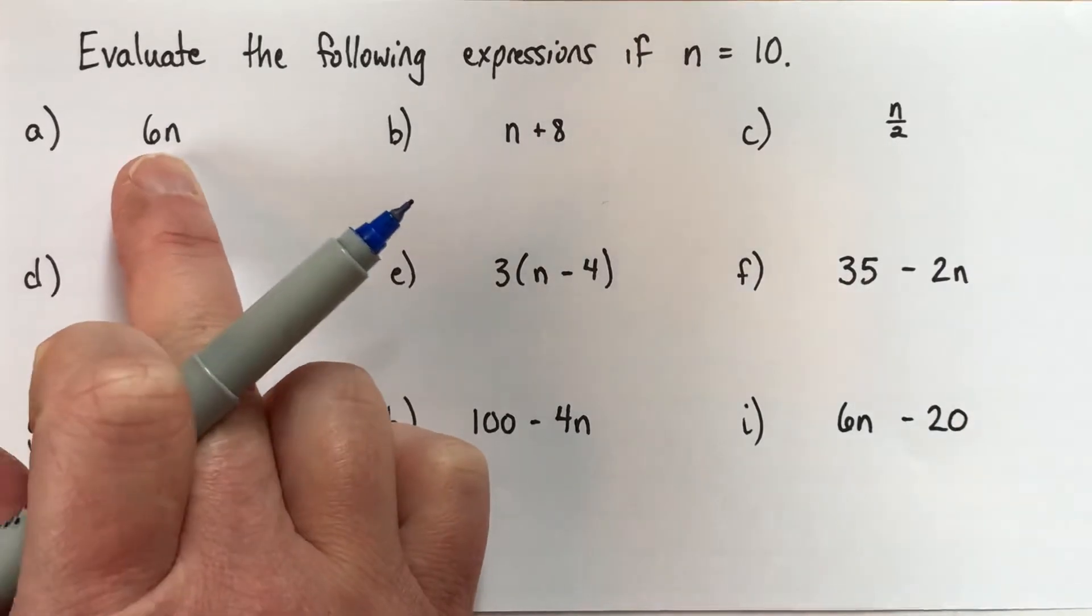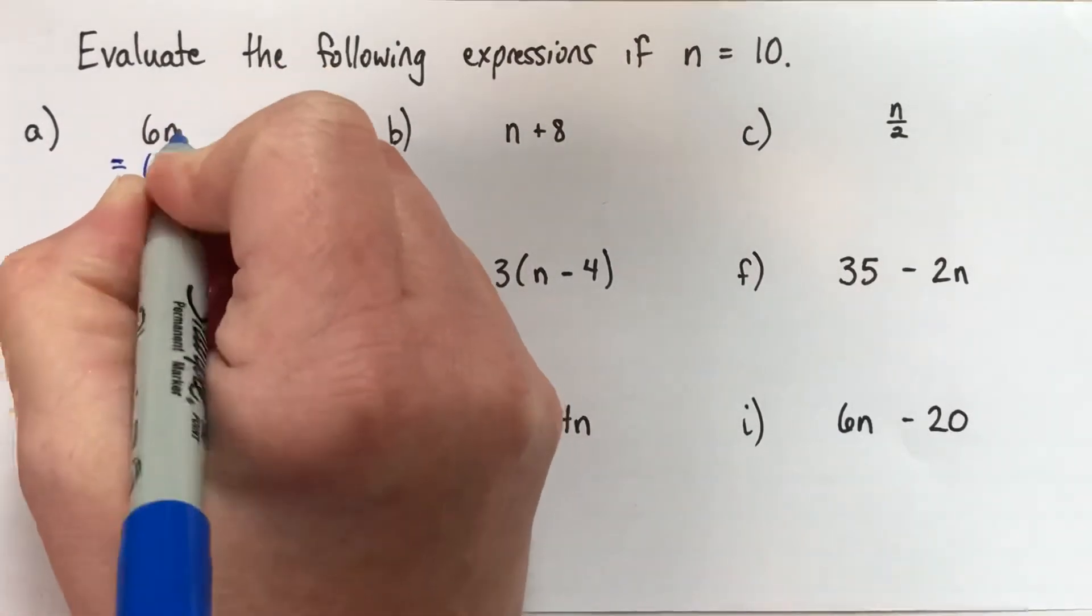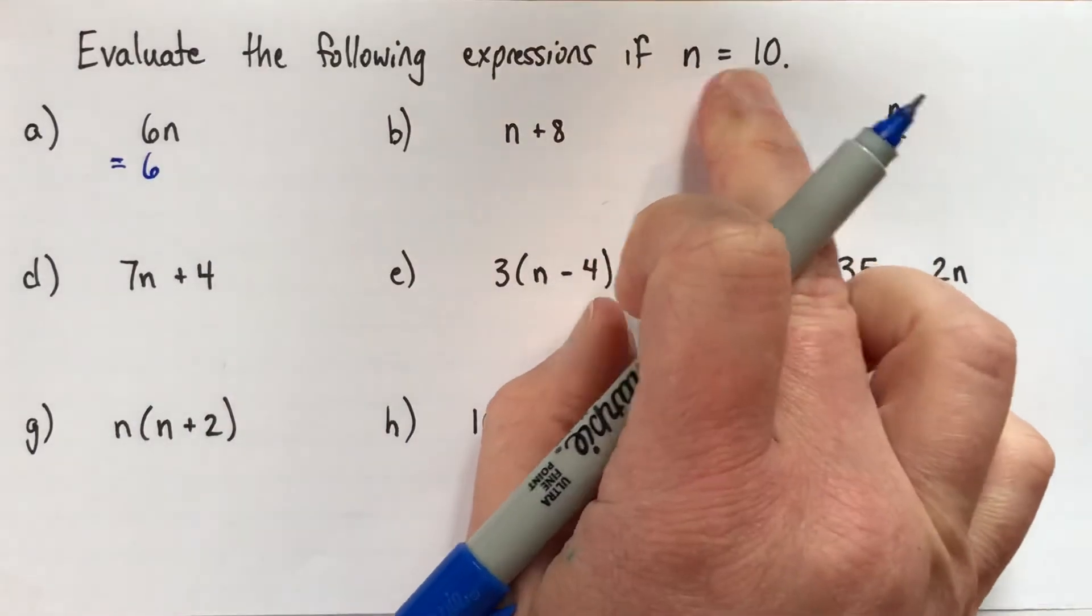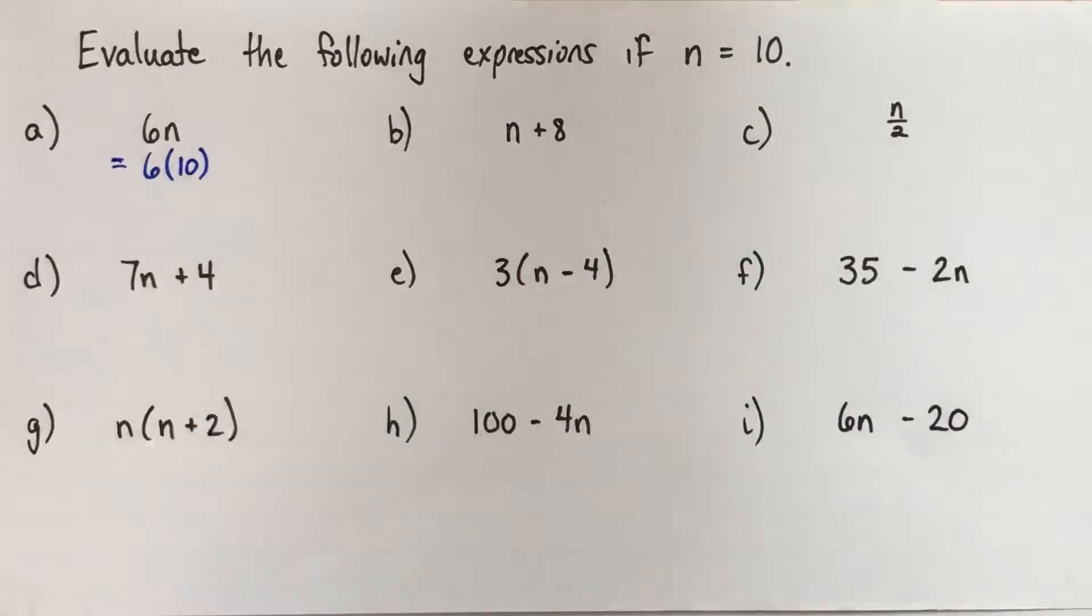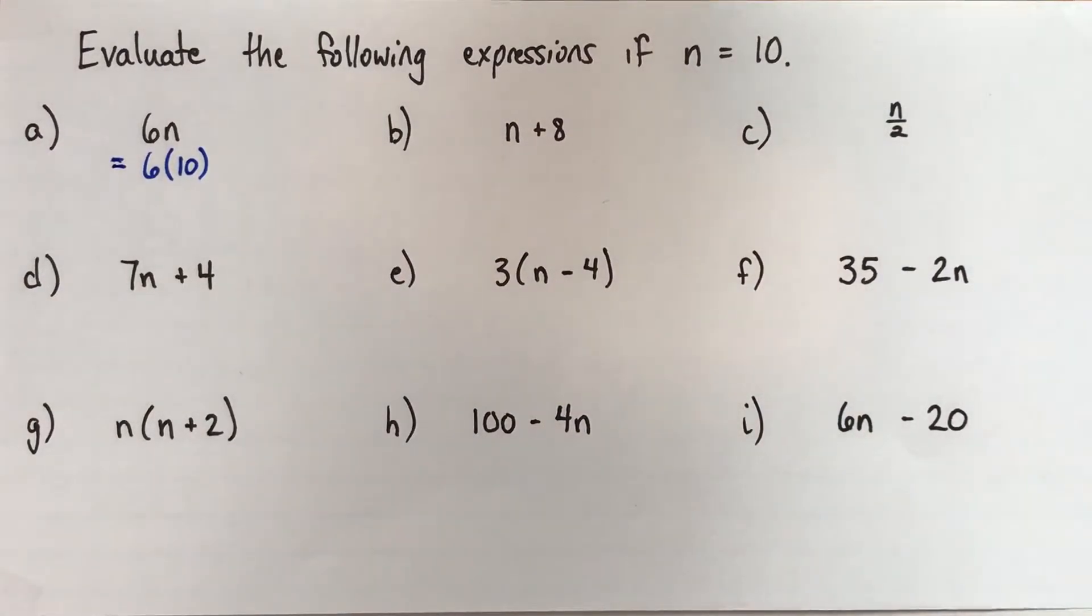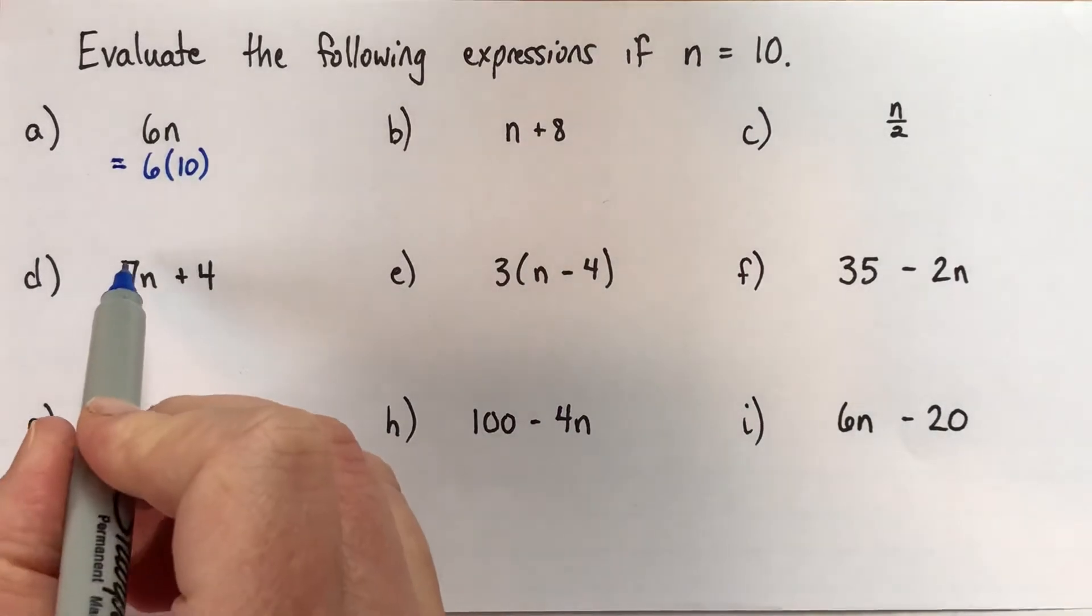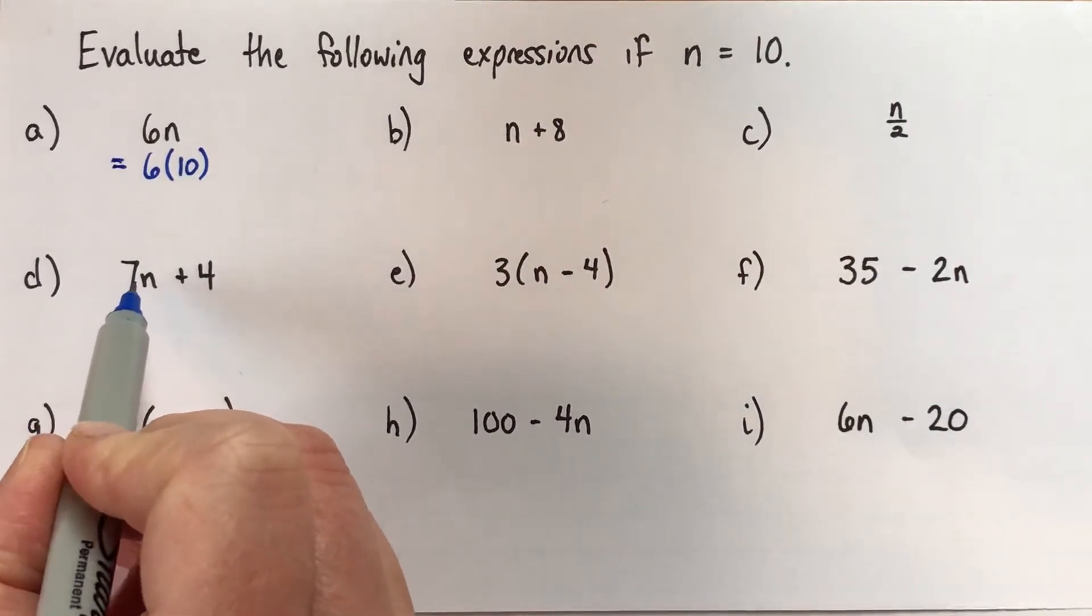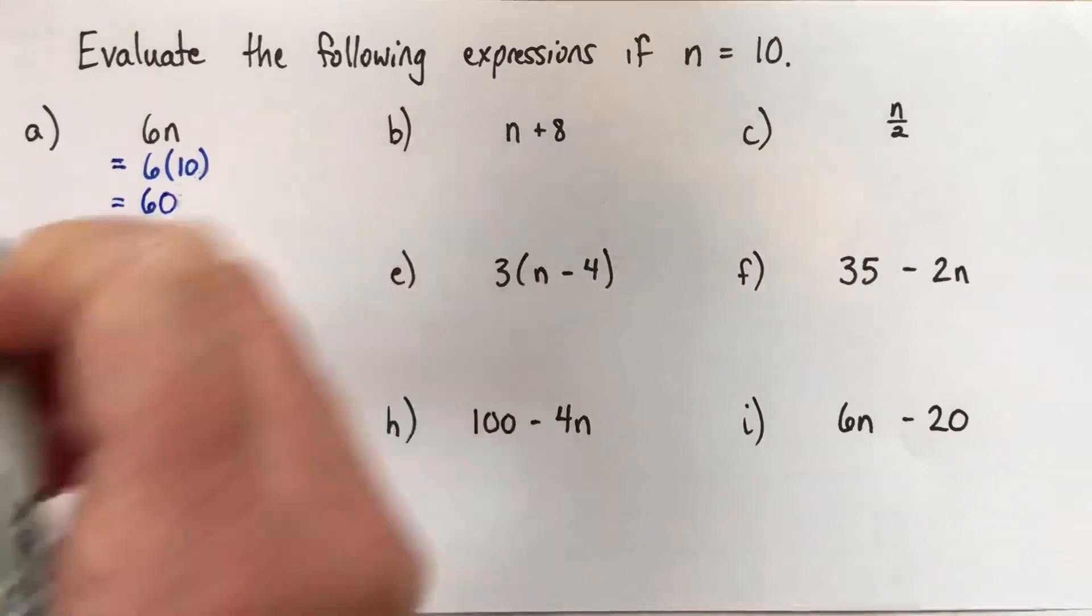Alright, so our first expression is 6n. So we'll write an equal sign underneath. And I'll copy it, but I'll replace my n with 10, because they told us that n is equal to 10. So I can replace the n with 10, and I'm going to put it in brackets. So 6 bracket 10 close bracket. So what does that mean? If you have no operations written between your numbers, it's always multiplication. So if you didn't know that, you should probably write it down. If you have no operations written between your numbers, the operation here, if there's nothing written, is always going to be multiplication. So this means 6 times 10, which is 60.